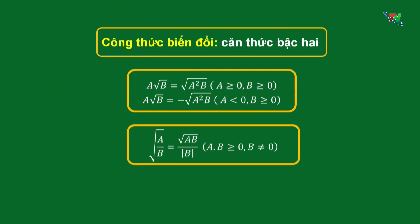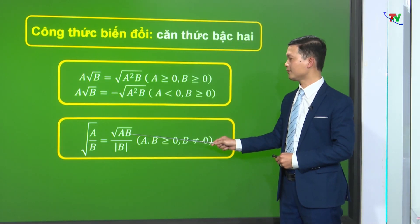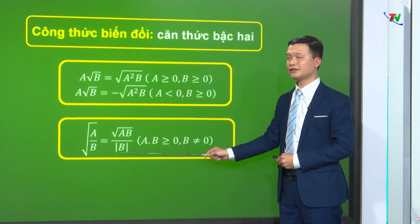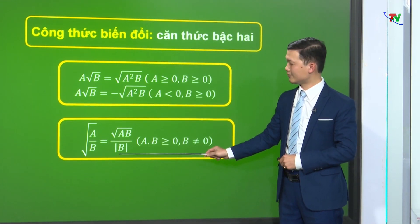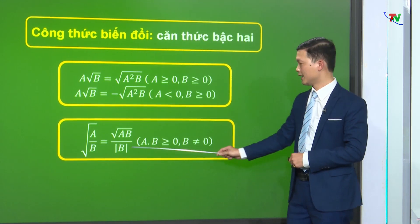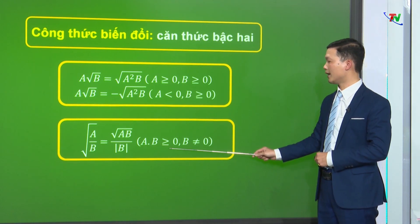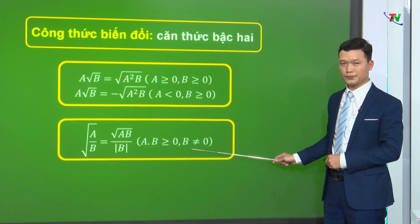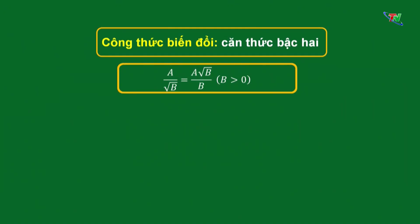Công thức tiếp theo là khử mẫu của biểu thức lấy căn: √(A/B) = √(A·B) / |B|. Trong công thức khử mẫu thì mẫu không còn căn, chúng ta chú ý phải có giá trị tuyệt đối. Điều kiện là A·B ≥ 0 và B ≠ 0 vì B nằm ở dưới mẫu. Tiếp theo là công thức trục căn ở mẫu thức với biểu thức dạng A/√B: nhân cả tử và mẫu với √B, ta được A·√B / B, với B > 0.